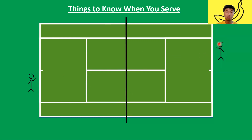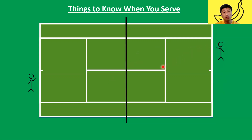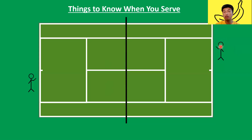What if you hit the ball and it clips the net and falls into the service box on a serve? We call this a let — L-E-T. Basically it's a redo, so you do that particular serve again. If you hit your first serve and it hits the net and goes in, you redo your first serve. If it's your second serve — meaning the first serve you missed, now it's your second serve — you hit the net and it goes in, you redo your second serve. Not the first serve — the second serve. You redo that serve.